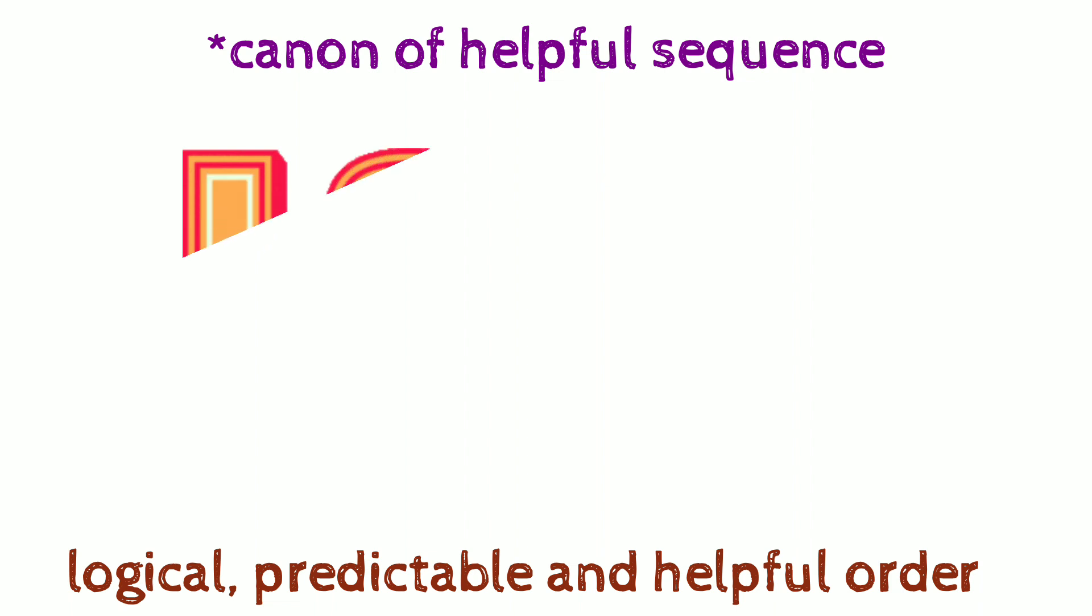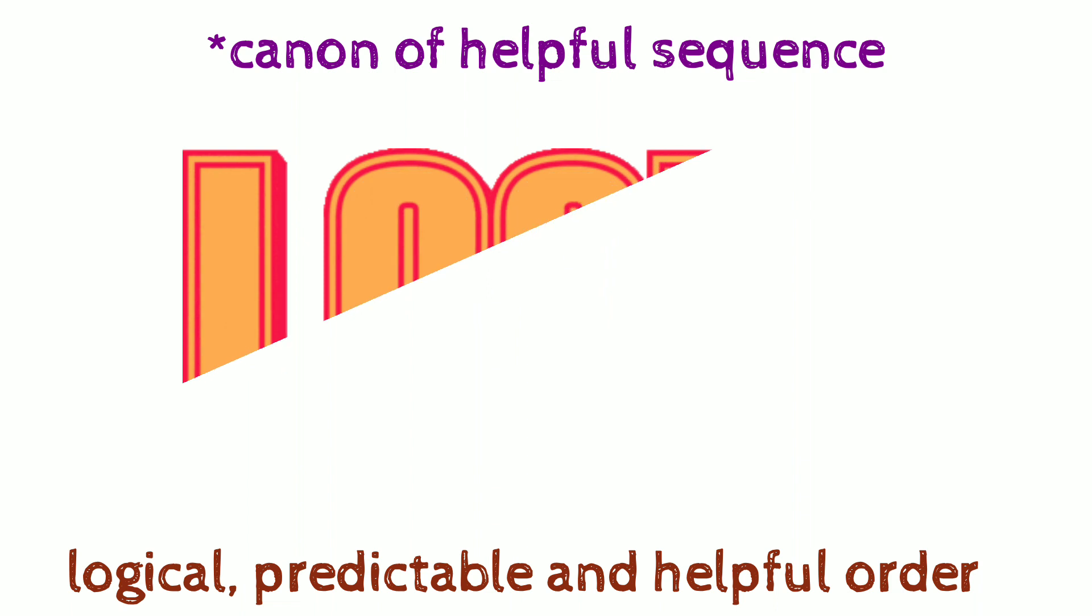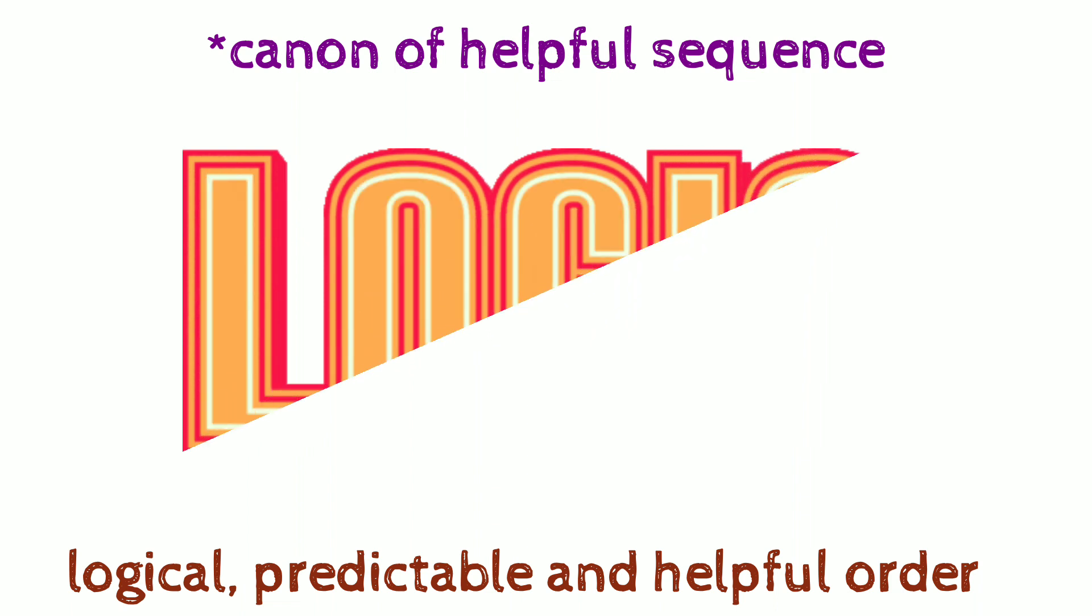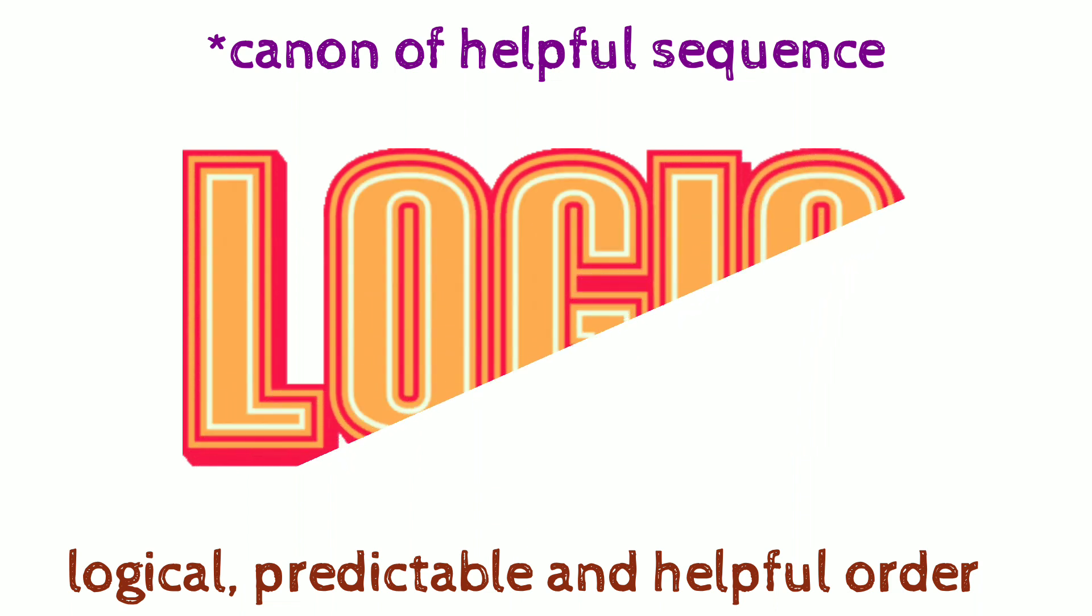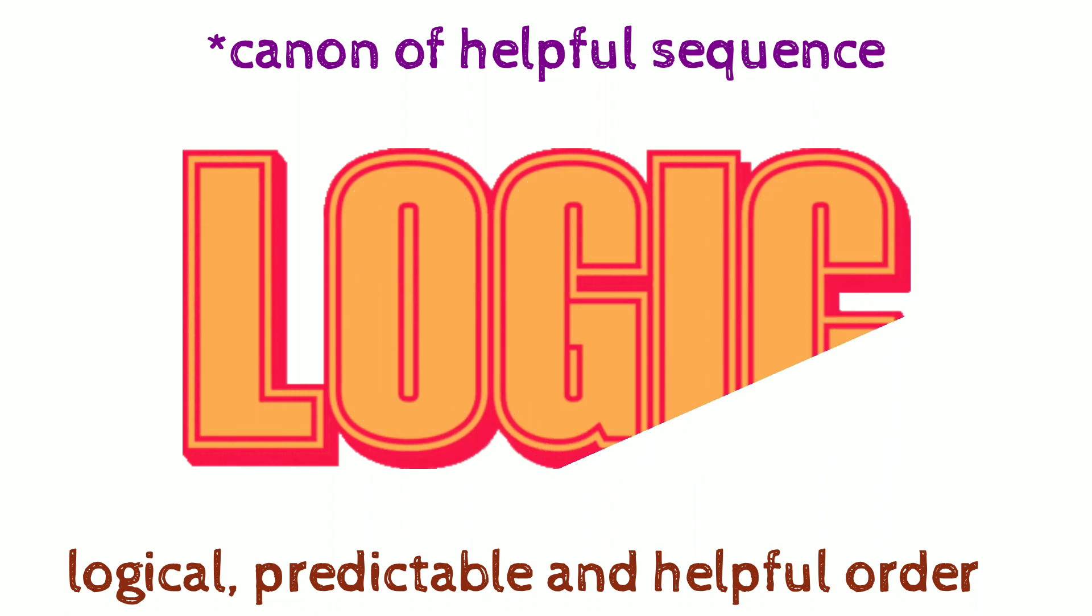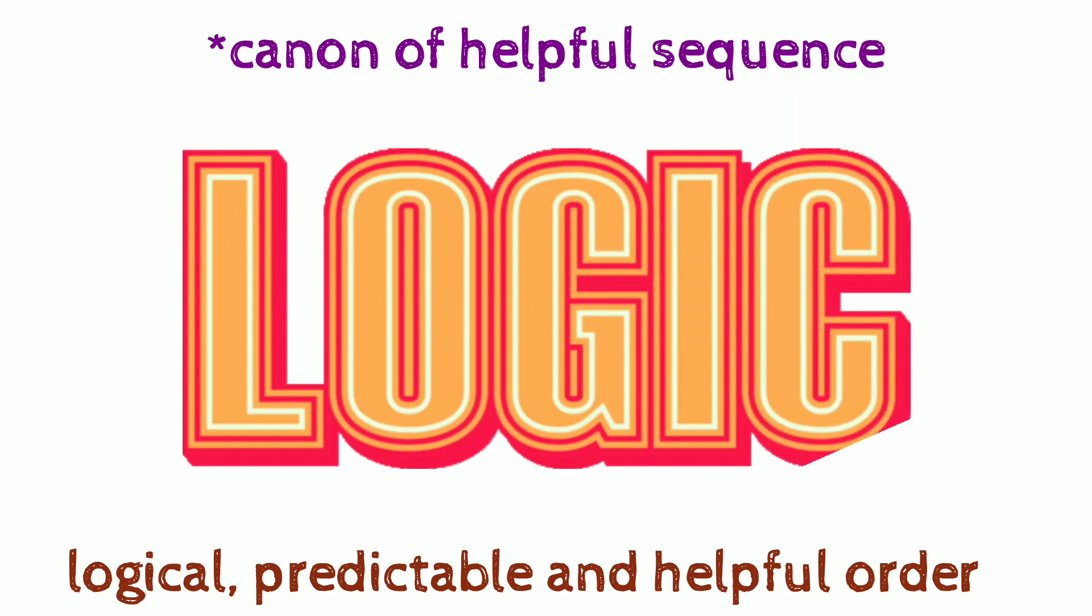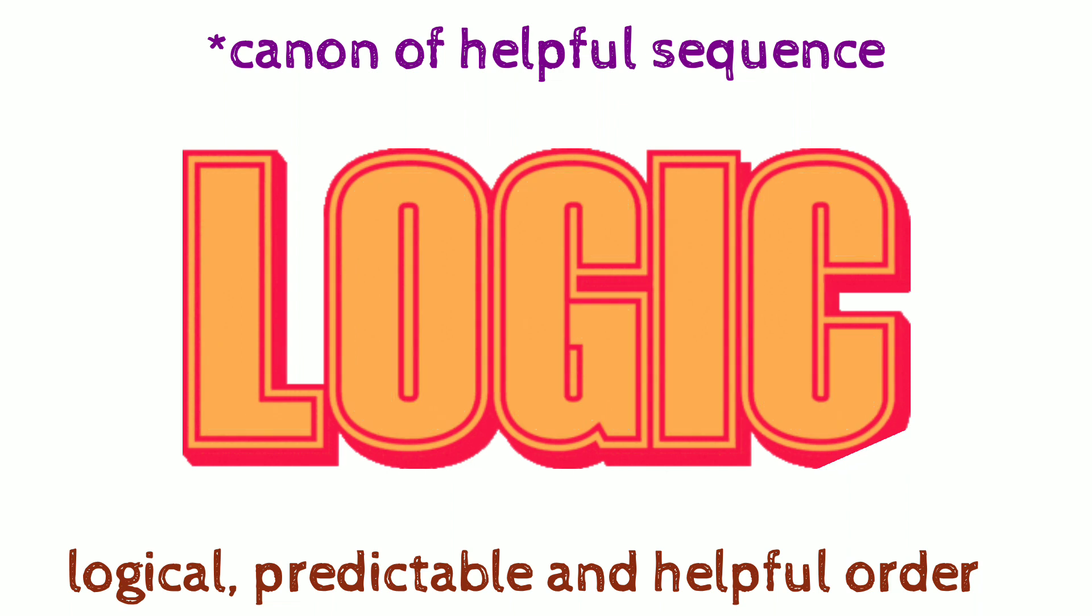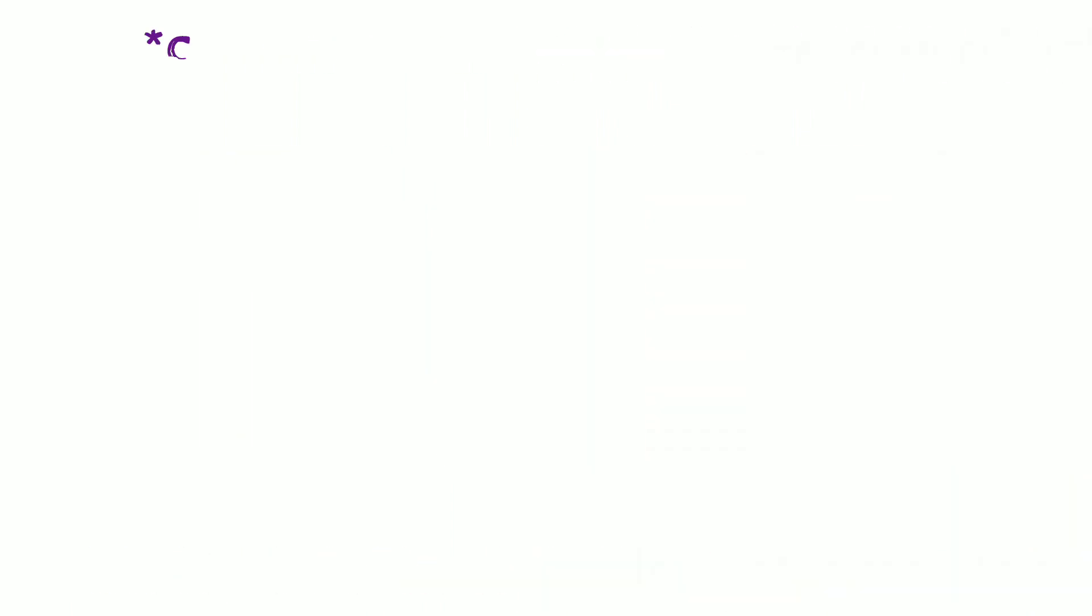The canon of helpful sequence says that when you prepare an array, it should be logical so that it can be used by the user, predictable, which means that if you look at that you can predict the next thing. Next, the order should be helpful for the user. So you can arrange your array in different ways, but it should be logical, predictable and helpful.